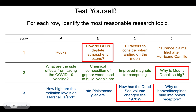Looking at the last row: how high are the radiation levels on Marshall Island? Very interesting, but we don't really talk about radiation levels in this class, so that's probably not appropriate. Glaciers — too general. We like: how has the Dead Sea volume changed since the 1970s? There's a lot of great research and satellite imagery data that actually shows how the seas have changed since the 1970s, so this is a great topic. And finally, why do benzodiazepines bind to opioid receptors? I'm personally interested in this one, but it's not relevant to this class — it's chemistry and biology, probably more biology than chemistry. We're not going to talk about that over the course of the semester, so probably not a good topic.